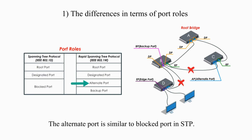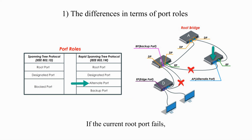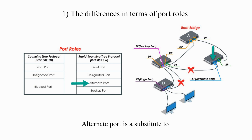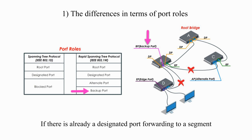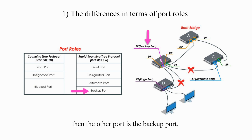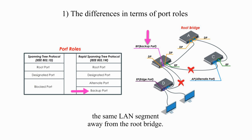The Alternate Port is similar to the blocked port in the Standard Spanning Tree Protocol. It is the second best root port to the root bridge. If the current root port fails, the Alternate Port will take over. Alternate Port is a substitute to a different segment towards the root bridge. On the other hand, the Backup Port is used as a redundant, non-designated port. If there is already a designated port forwarding to a segment, then the other port is the Backup Port.